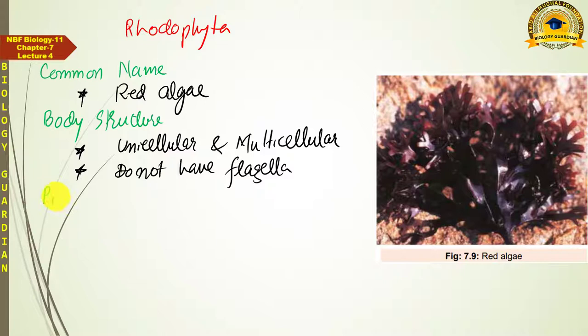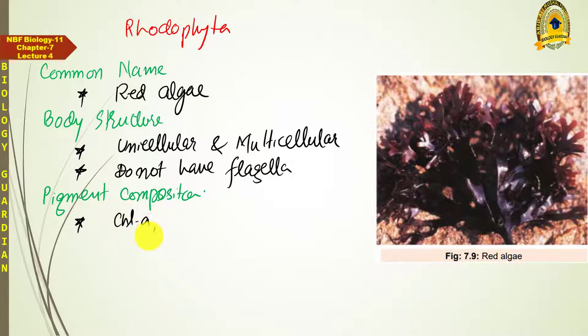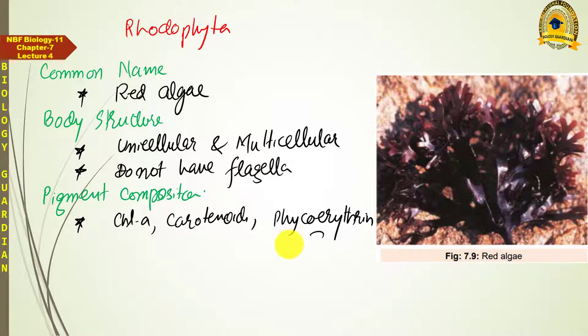Regarding the pigment composition of Red algae, they have Chlorophyll A but no other type of chlorophyll. They also have phycoerythrin — a type of phycobilin — which is a red-colored pigment found only in Red algae, and due to its abundance their color appears reddish.